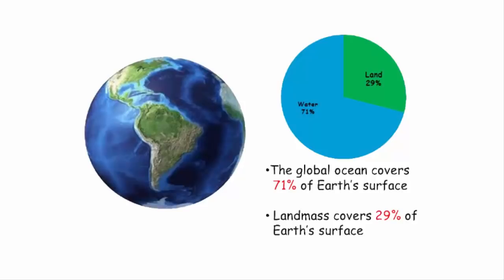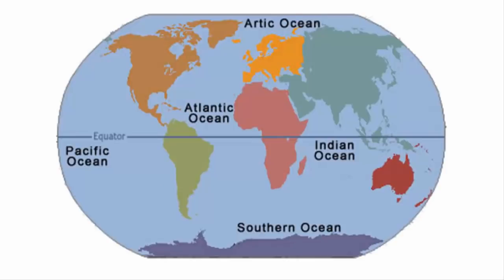The surface of the Earth is approximately 71% water and contains 5 oceans including the Arctic, Atlantic, Indian, Pacific and Southern Ocean.